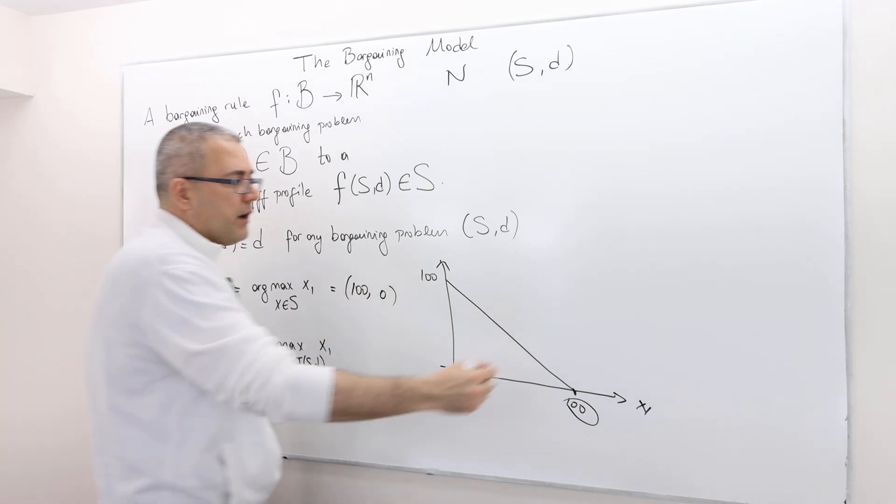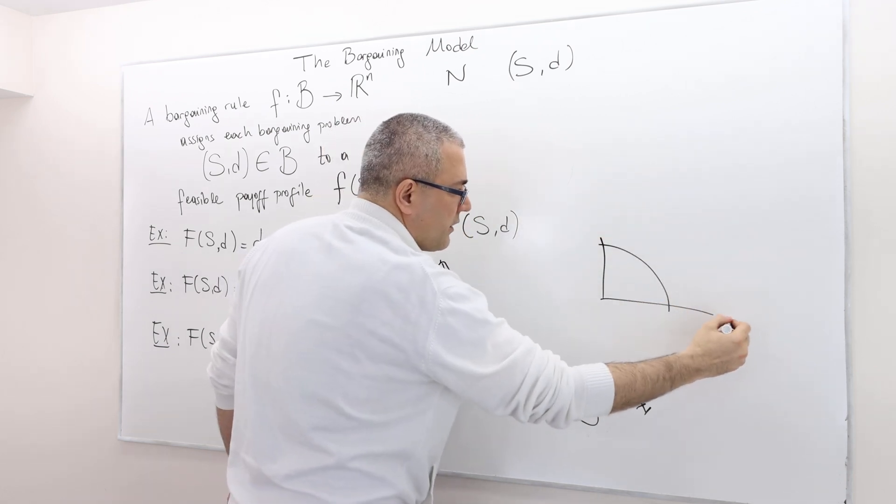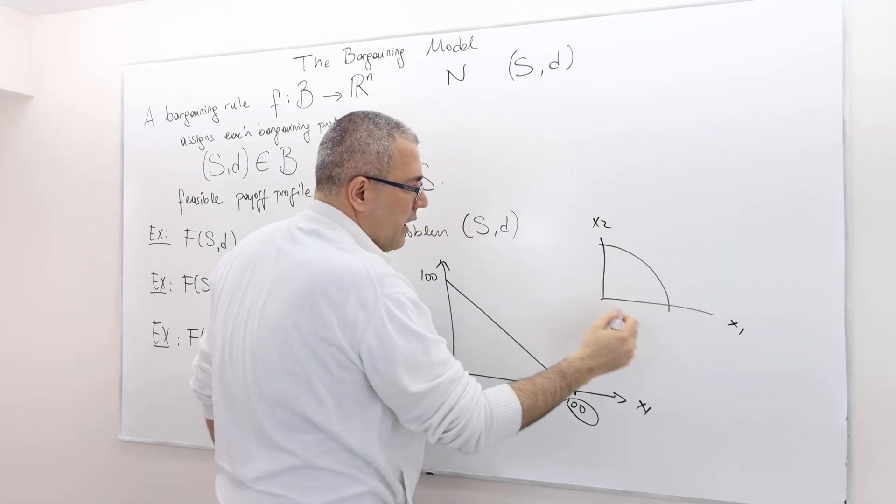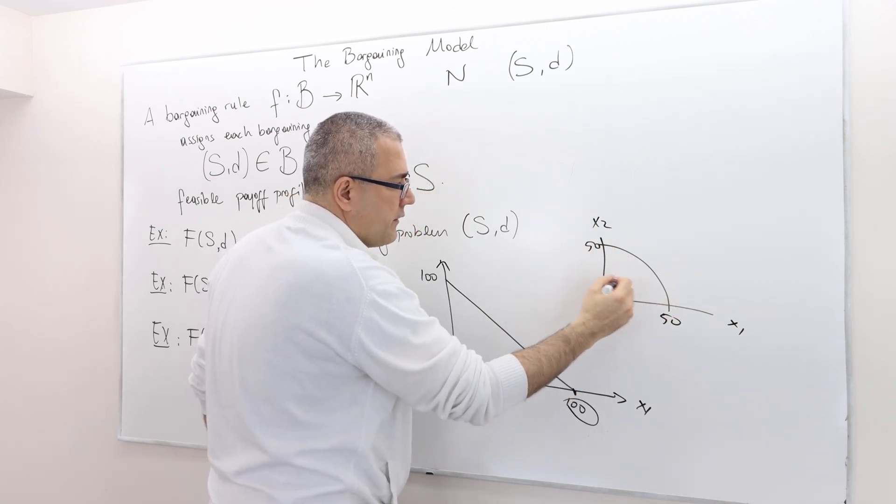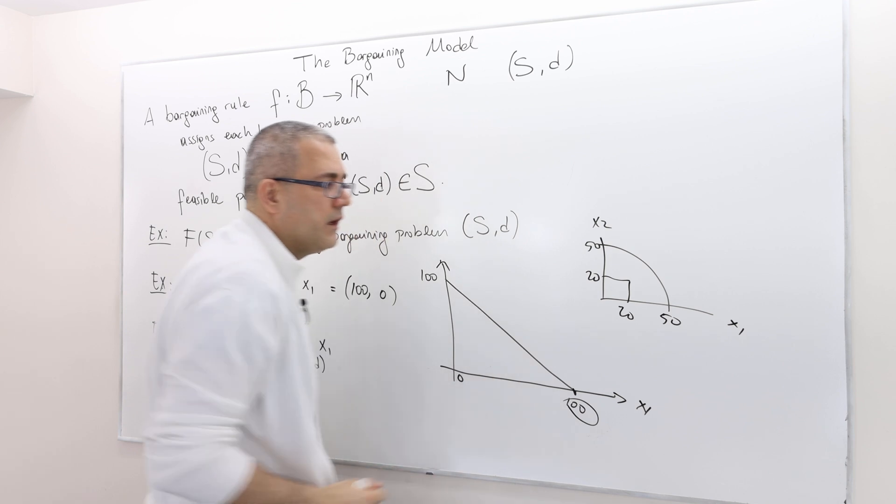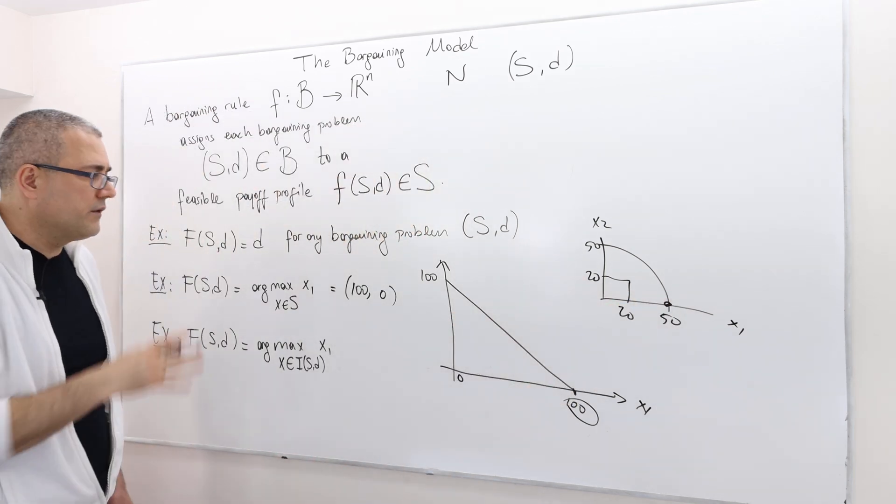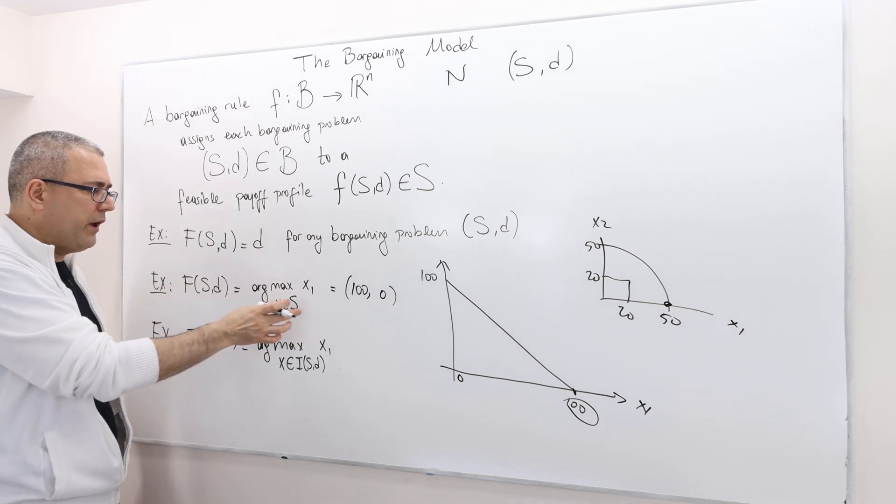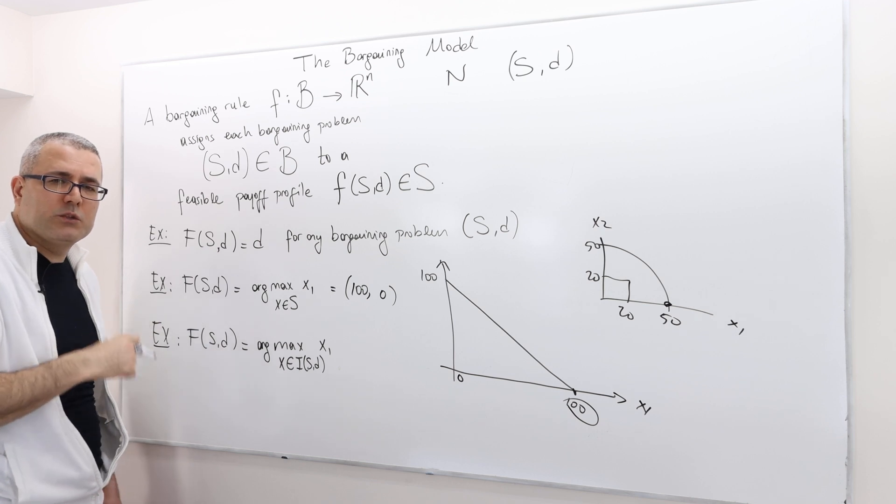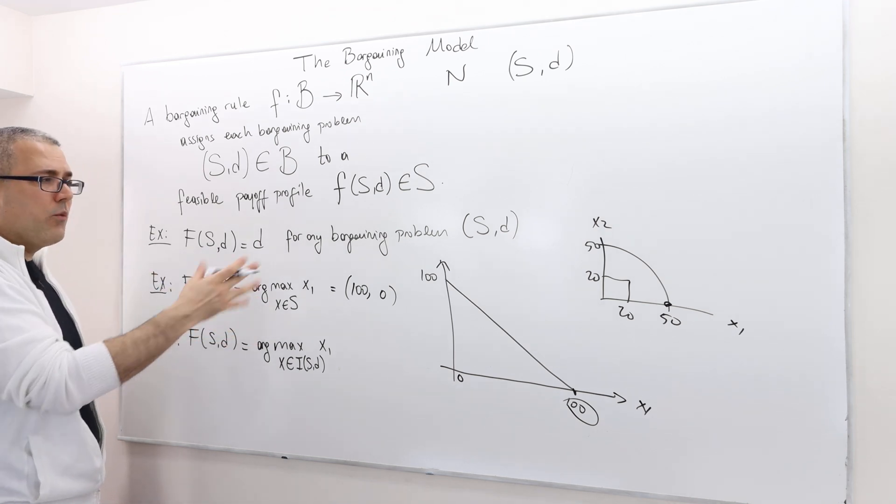If you change the bargaining problem to this one, so this is x1, this is x2, this is 50, this is 50, whatever d is, 20, 20. So it says, choose this point, 50, zero this time, because it is the maximum feasible payoff vector which maximizes player one's surplus or utility. So this is how it works.